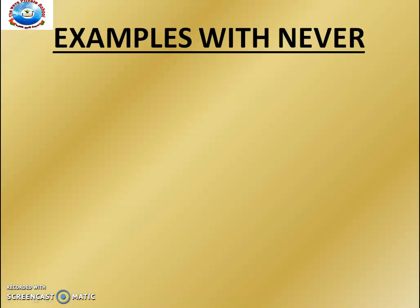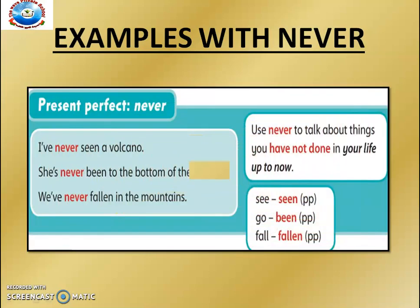Now let's see the examples of Present Perfect with never. On page number 88, you can see some sentences: 'I have never seen a volcano.' 'She has never been to the bottom of the ocean.' 'We have never fallen in the mountains.' So here are a few sentences with never.